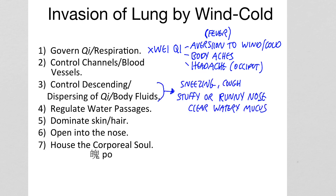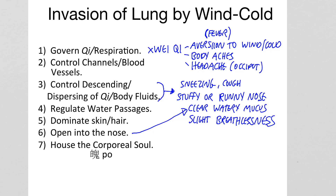The lung's descending and dispersing function gets blocked so the lung qi rebels upwards, giving sneezing, cough, and a stuffy or runny nose with clear watery mucus because of the cold. This might also give slight breathlessness — remember that the lungs open into the nose and the sinuses. The pulse is floating because of the wind invasion and tight because of the cold.